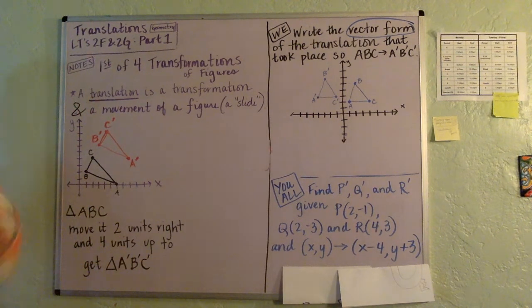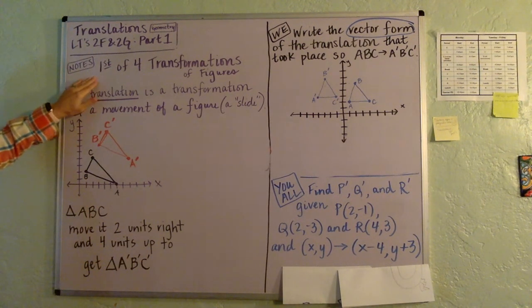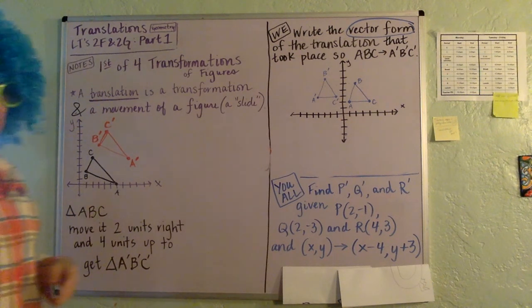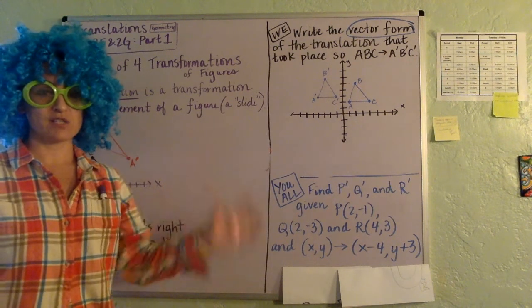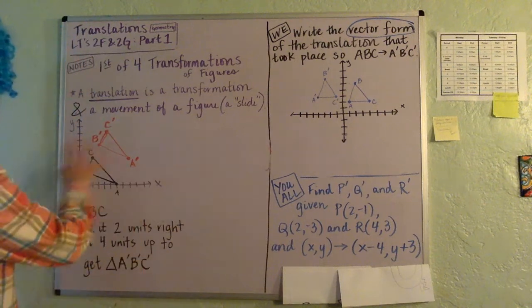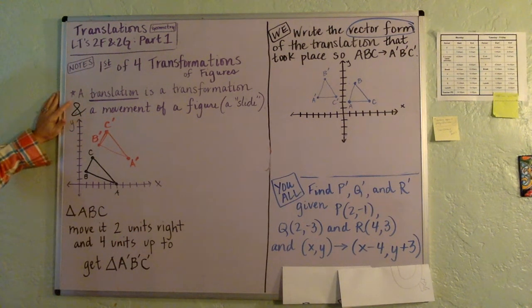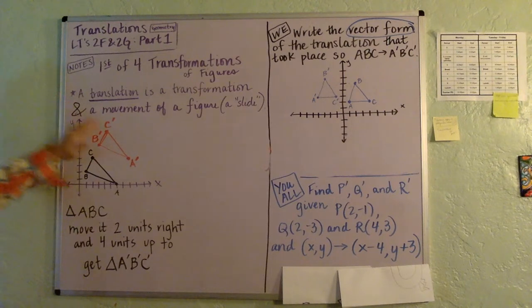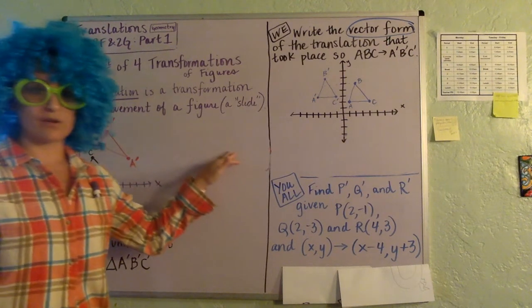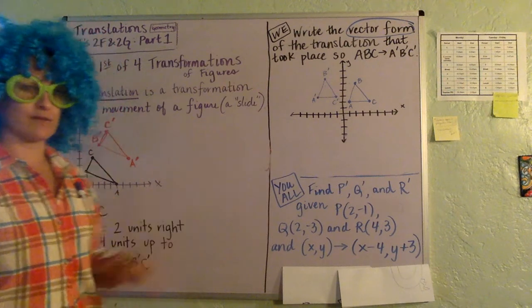So let's have a look here. First of four transformations we are going to be talking about. Transformations are changes that we make to a figure on a plane. So the first one we're going to talk about is called a translation, and it's a transformation which is simply a movement of a figure. It's a slide of a figure.